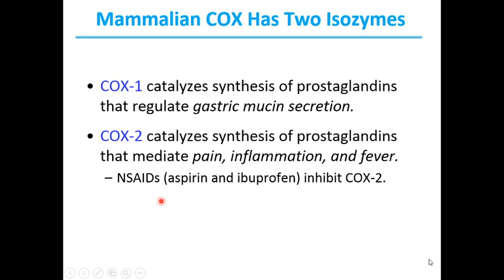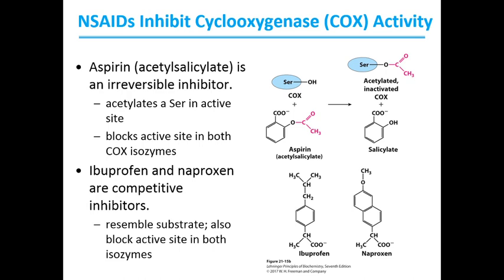NSAIDs, or non-steroidal anti-inflammatory drugs, such as aspirin and ibuprofen, inhibit COX-2. Pain can be relieved by inhibiting cyclooxygenase activity, specifically COX-2 activity. The first drug widely marketed for this purpose was aspirin, or acetylsalicylate. Aspirin is an irreversible inhibitor of the cyclooxygenase enzyme; it acetylates a serine residue in the active site, resulting in an inactivated COX. This blocks the active site in COX enzymes, thereby preventing the synthesis of prostaglandins and thromboxanes.